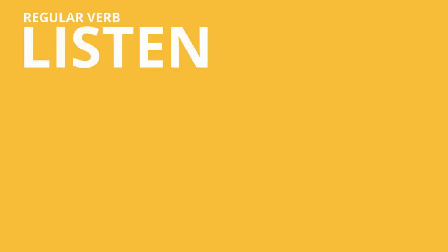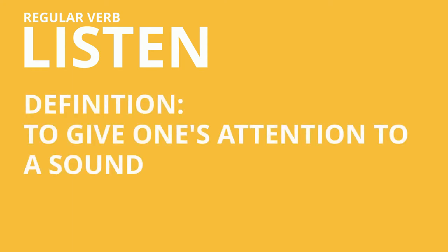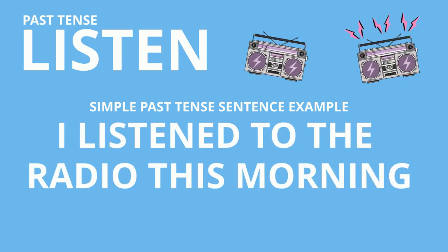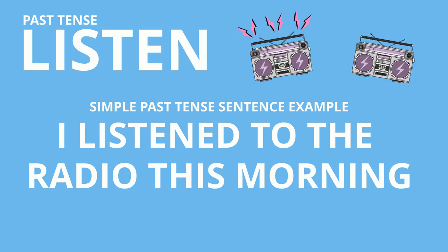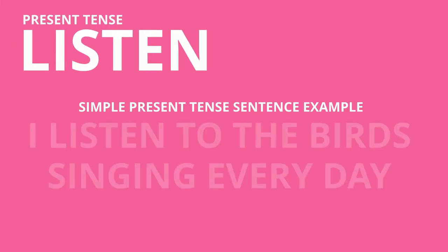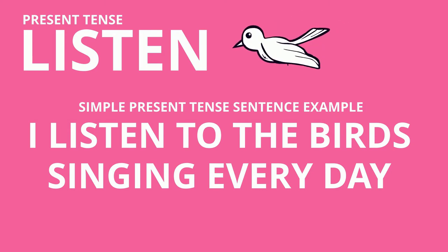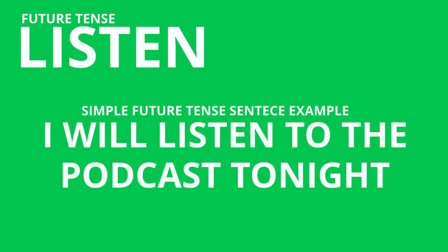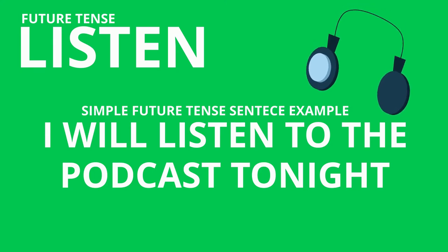An important verb related to hearing is the verb 'to listen.' This is a regular verb, and the definition is to give one's attention to a sound. So we hear all the time, but to listen is to actively pay attention to a song, someone's voice, or a podcast perhaps. In the past tense: 'I listened to the radio this morning.' In the simple present: 'I listen to the birds singing every day.' In the simple future: 'I will listen to the podcast tonight.'